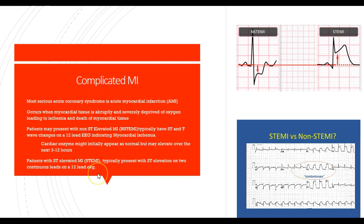Patients with STEMI typically present with ST elevation on two consecutive leads — two leads must be confirmed. Looking at this diagram, tombstoning is visible across multiple consecutive leads — three or four in this case — we only need two to confirm a positive STEMI.